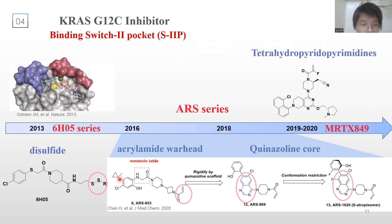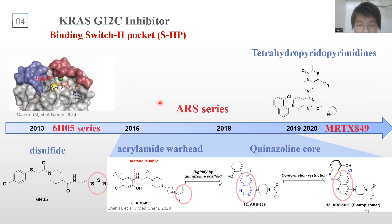The development of allosteric inhibitors started with the discovery of the DCAI series of compounds. Shokat and colleagues used a disulfide-based screening approach, first leading to the identification of the novel binding site — the switch-2 pocket underneath the switch-2 region. As for the ARS series of compounds, they have an acrylamide warhead, such as ARS-853, which was subsequently modified with an acrylamide naphthalene scaffold, leading to the identification of ARS-1620.